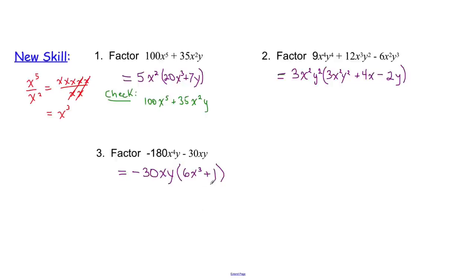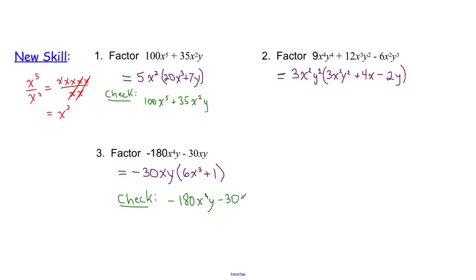This has been factored. We can check it: -30 times 6 is -180, x times x³ is x⁴, and the y is involved. -30 times 1 is -30, x times 1 is x, y times 1 is y. That gives us the original statement, so we're correct.